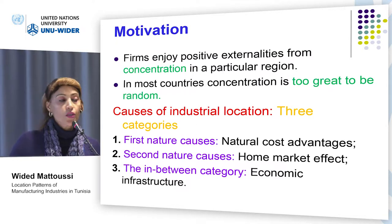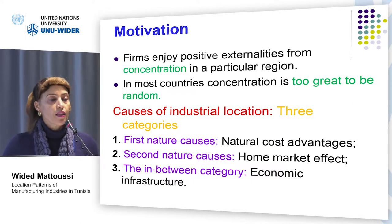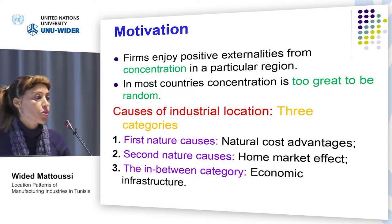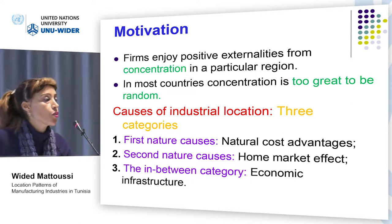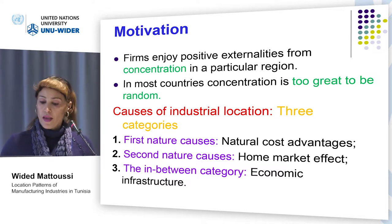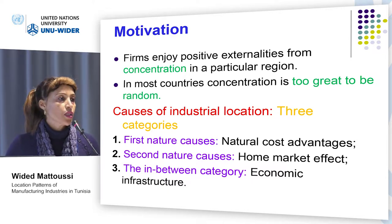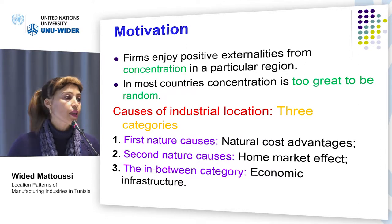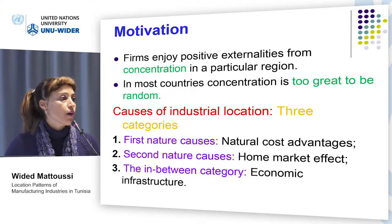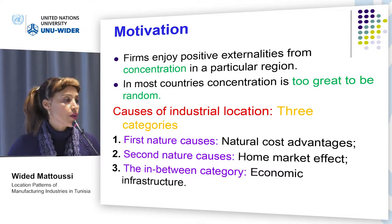The first category is what we call first nature causes. These concern concentration attributed to natural cost advantages including the proximity to the sea, the characteristics linked to the physical landscape, the abundance of natural resources, favorable climate conditions, and so on.